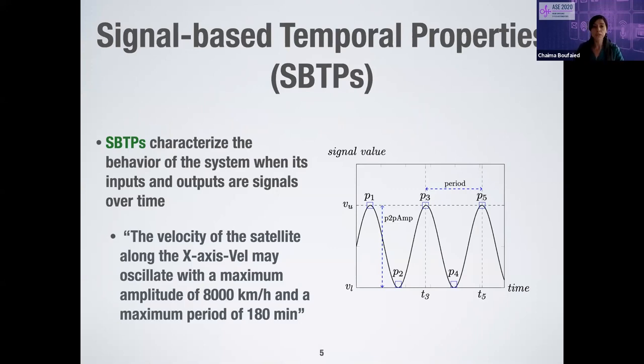An example of a complex behavior is oscillations. An example of an oscillations-based property might be: the velocity of the satellite along the x-axis may oscillate with a maximum amplitude of 8,000 kilometers per hour and a maximum period of 180 minutes.